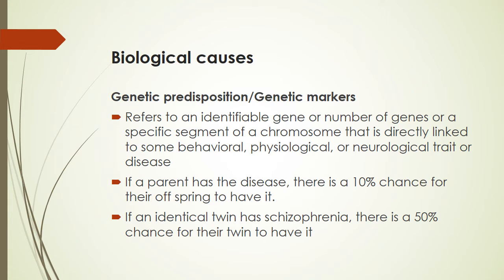However, if an identical twin has schizophrenia, there is a 50% chance that their twin will have it — meaning it's definitely part of the DNA, part of what twins share in terms of their identical genetic material. We don't know what necessarily these genetic markers are yet, but we know that they play a large function in this particular situation.